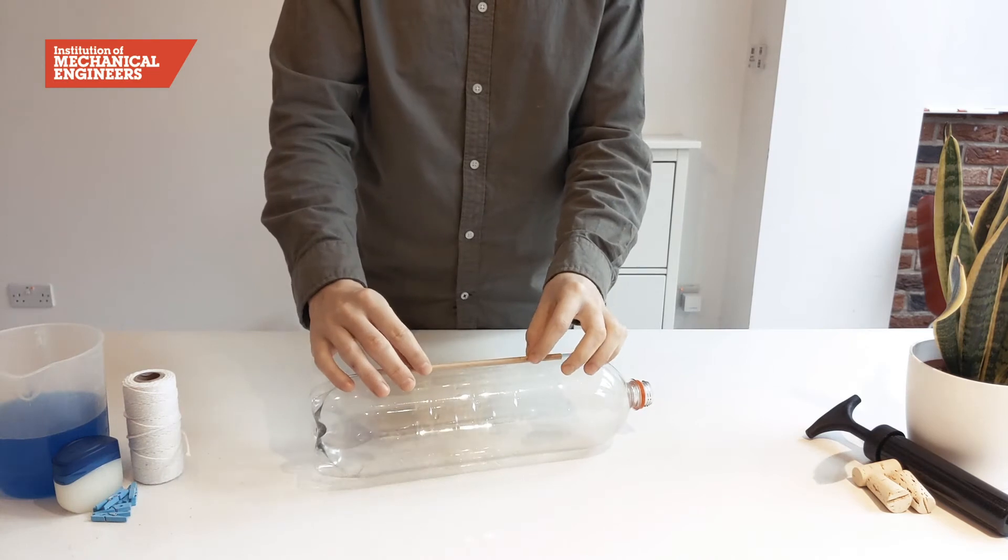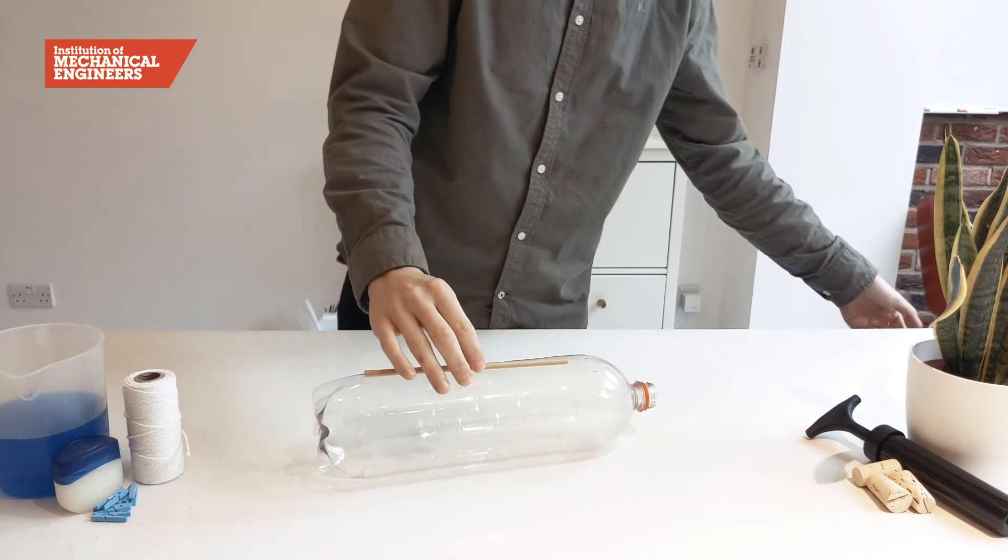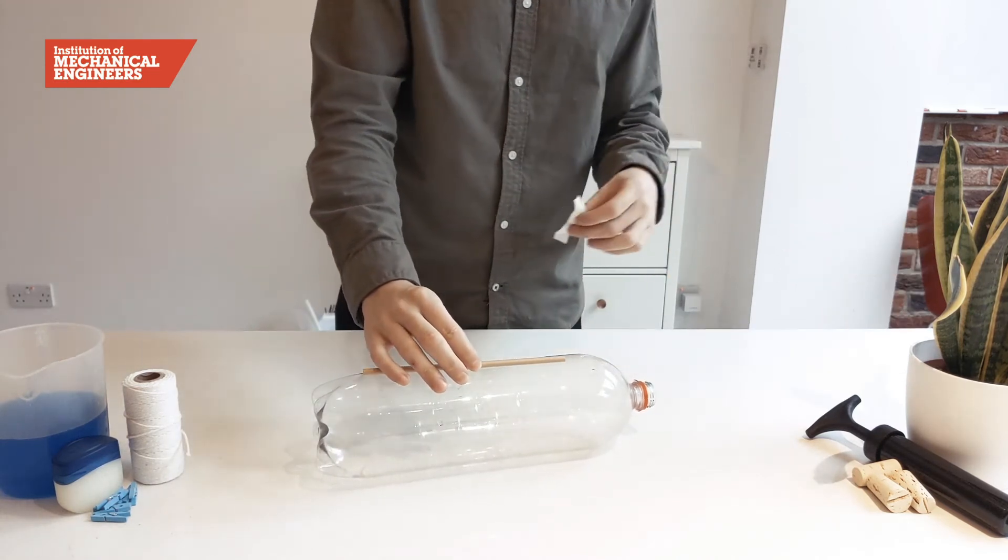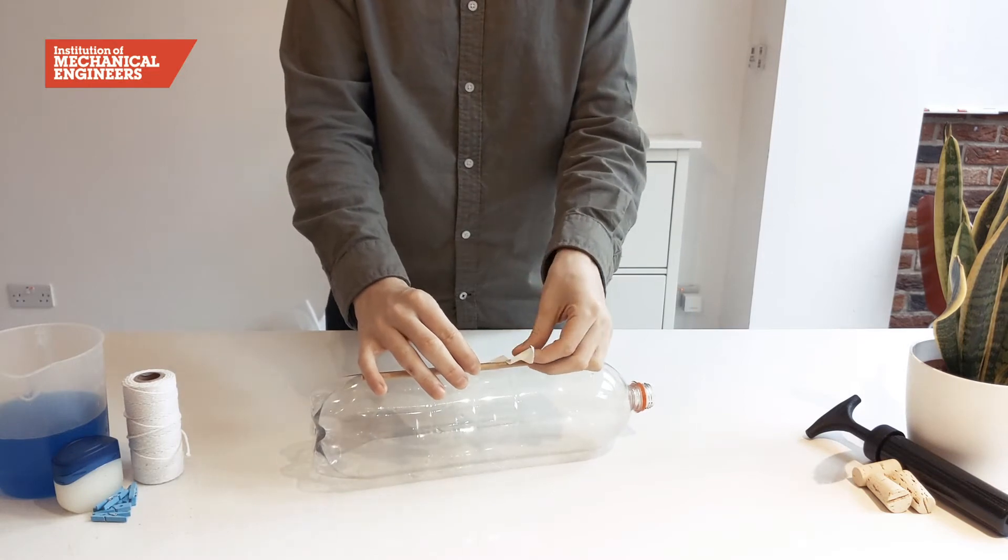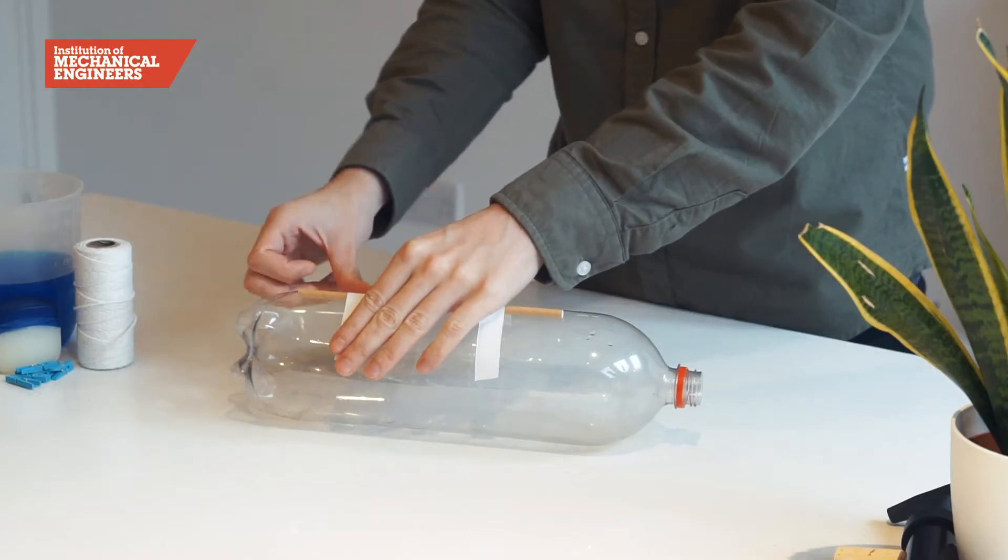First we are going to take the straw and hold it lengthways against the edge of the bottle. We will then secure it very tightly with adhesive tape, making sure it does not bend.